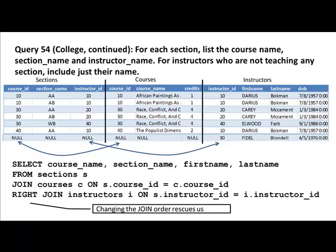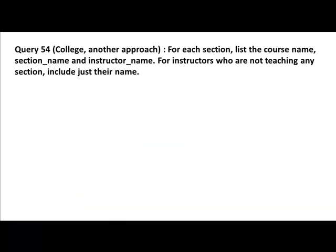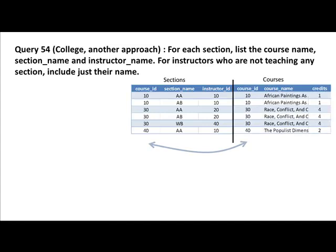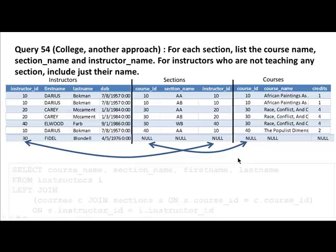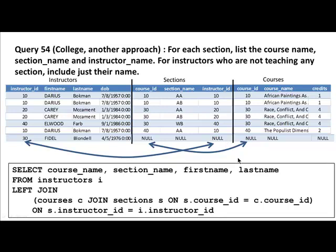So either you can control that by just ordering it properly so that the join naturally happens first, or you could use parentheses to force that join to happen first. That's what this is showing you. So first join sections and courses, then join instructors and get all our nulls. How do you make sure that the instructors table gets joined to the result of sections and courses? You can do that using parentheses as shown here.